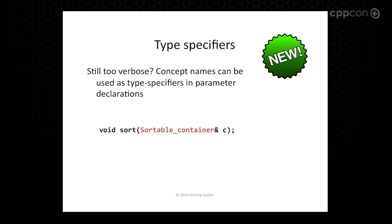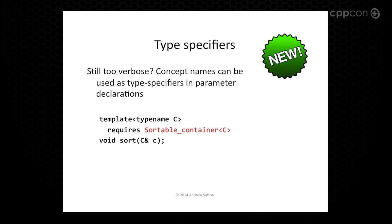If all of that is still too verbose, you can actually use a concept name as a type specifier. So if sortable_container is a concept, you can just write sortable_container C, and this will mean the template version. Pretty straightforward. And all of these declarations are exactly equivalent — it's just notation.